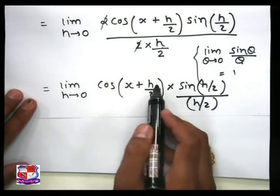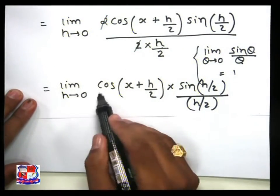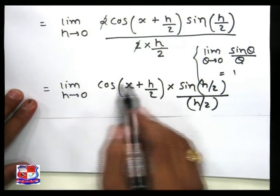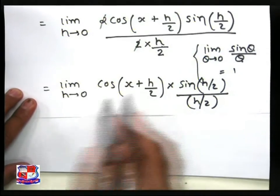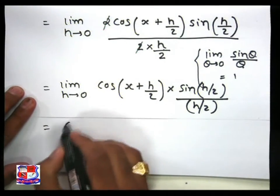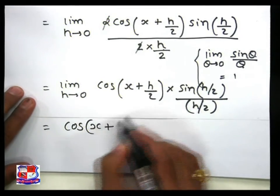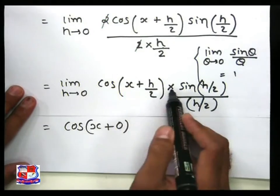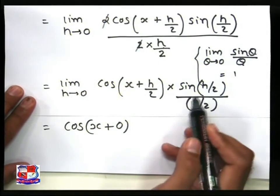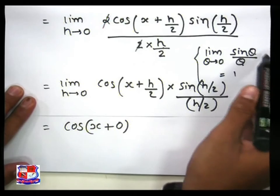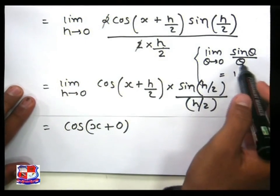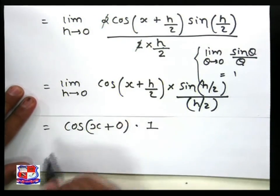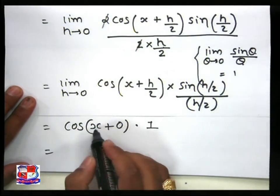Now we apply the limit. Putting h equals 0: cos of x plus 0 over 2 becomes cos x. Applying the limit to sin of h over 2 divided by h over 2, by the standard rule this equals 1. Therefore f dash x equals cos x times 1, which gives f dash x equal to cos x. This proves that the differentiation of sin x is cos x.